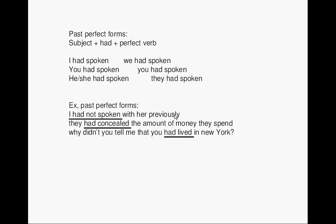Past perfect forms: subject plus 'had' plus verb in past participle form. I had spoken, you had spoken, he or she had spoken, we had spoken, you had spoken, they had spoken. Example: I had not spoken with her previously. They had concealed the amount of money they spent. Why didn't you tell me that you had lived in New York?